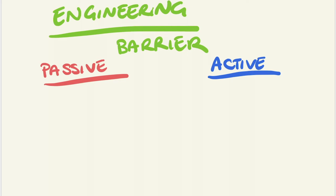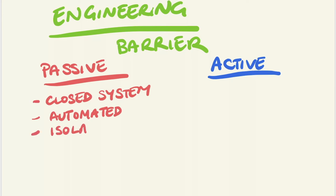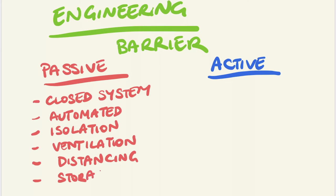This can involve using a closed system when processing chemicals, automating the process as much as possible, isolating operations in one room with restricted access, ensure a suitable ventilation system is used for the specific work involved, physical distancing of workers from hazardous chemicals, isolation of individual chemicals in terms of barrier and distance, ensuring adequate storage and disposal, and storage by walls and doors for fire and explosions.